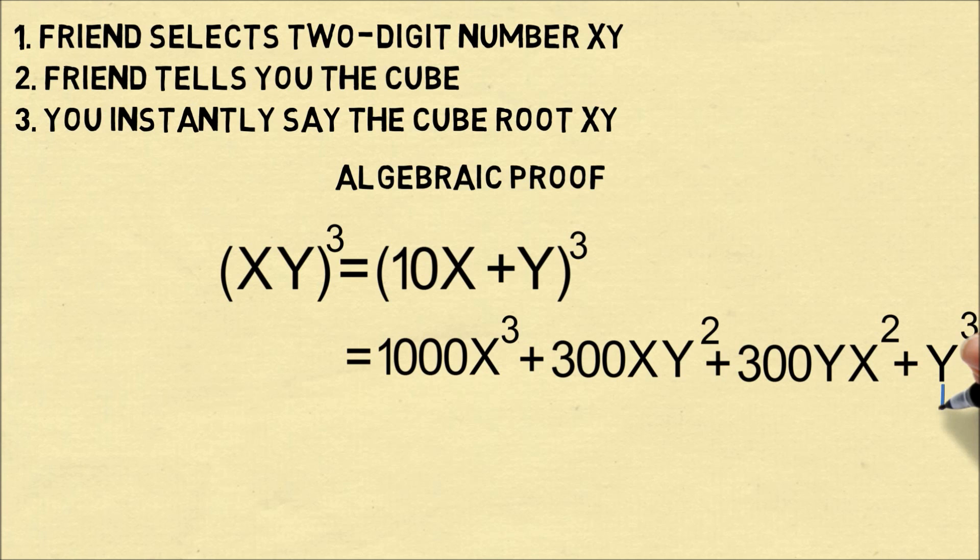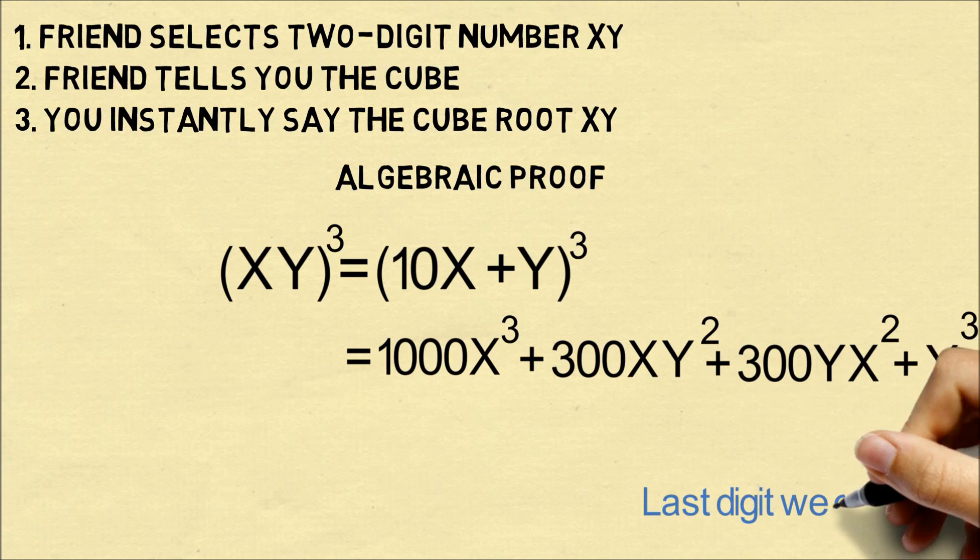So this y³ will be the only value that's in the units digit. So the last digit of the number, we can backtrack from y³ to get the last digit y.